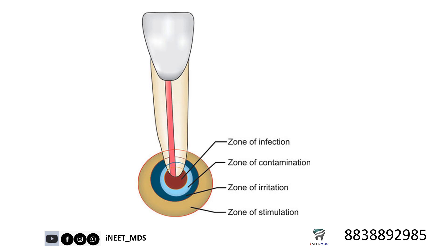From an MCQ point of view: the zone of infection mainly comprises polymorphonuclear neutrophils — it contains mainly neutrophils, which are responsible for primary infection. Zone of contamination has more lymphocytes. Zone of irritation has more osteoclastic activity. Zone of stimulation has fibroblasts and osteoblasts.